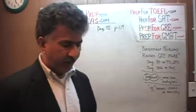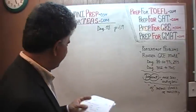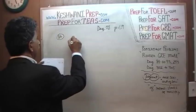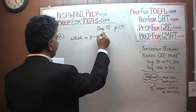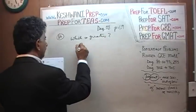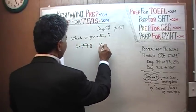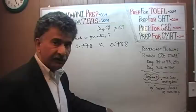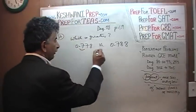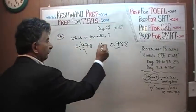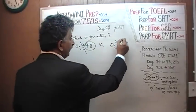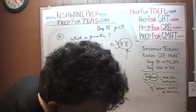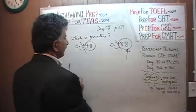We are comparing decimals and fractions on page number 69. The very first one asks us which one is greater. Number 26 says: which is greater, 0.778 versus 0.788? We realize that the first digit after the decimal is the same for both — it's 0.7 and 0.7 — so that plays no role. Essentially what we are comparing is 78 versus 88, and of course 88 is greater. So the answer is 0.788 is greater.